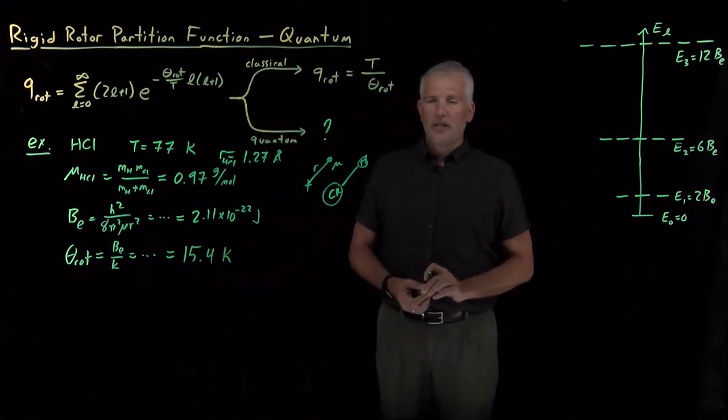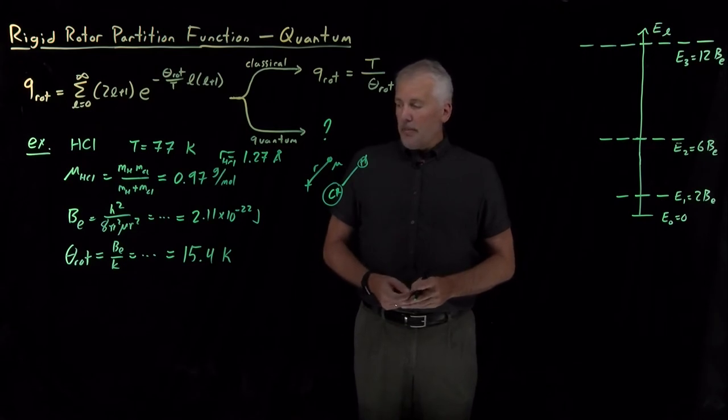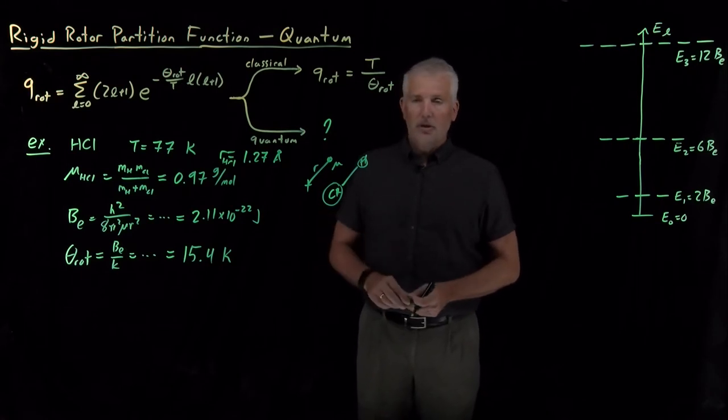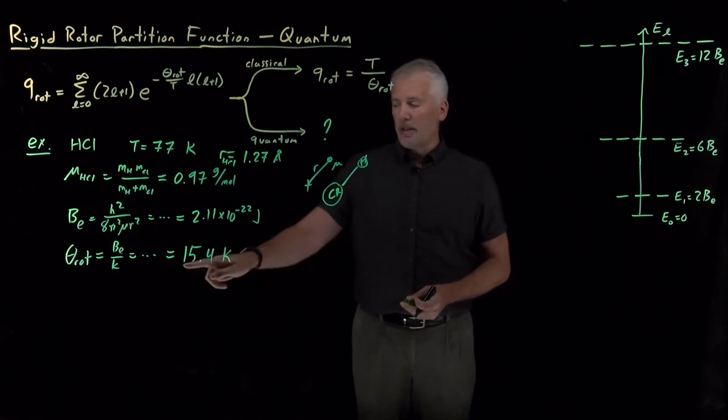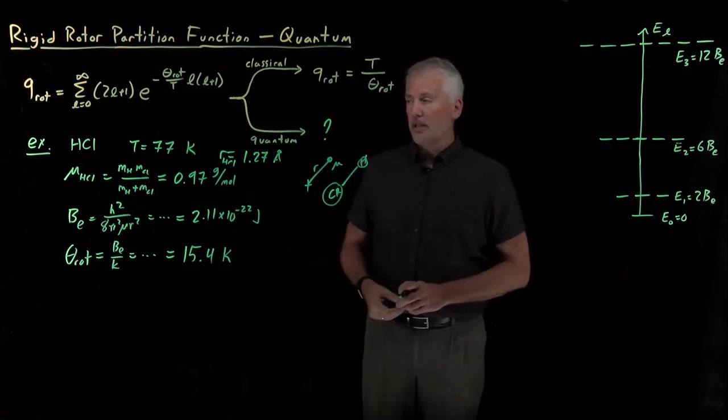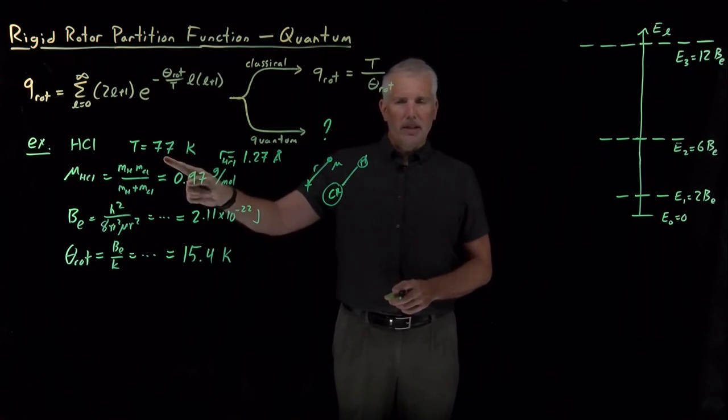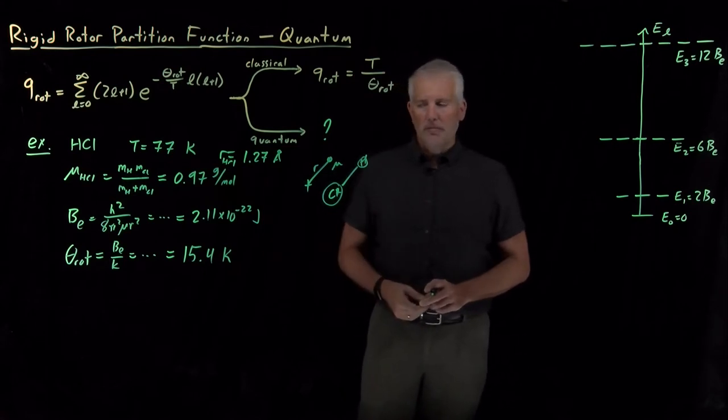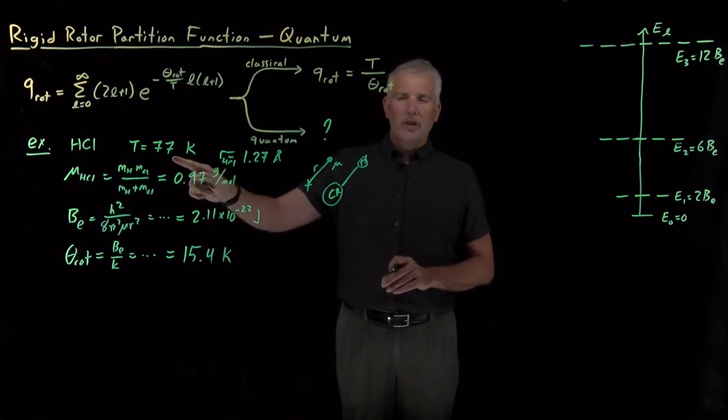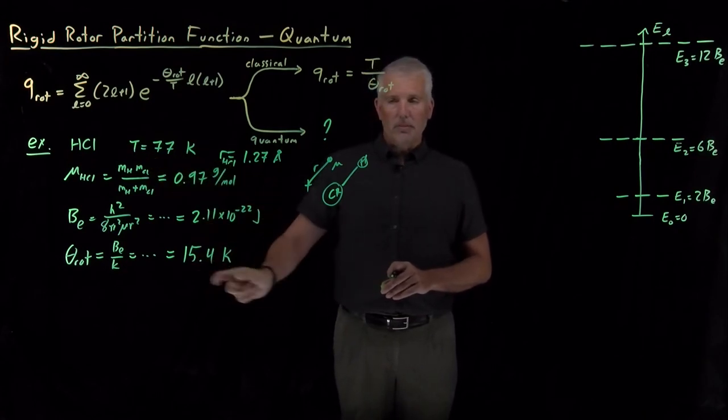So the rotational temperature of this HCl molecule is 15.4 Kelvin. That's the number that we can stop and think what it means. Is that hot or cold? That sounds like a small number, 15.4 Kelvin. It's a little larger temperature than we saw previously for carbon monoxide. So that means it's more quantum mechanical, largely because its reduced mass is much smaller than carbon monoxide's was. But notice that 15.4 Kelvin, although it's less than 77 Kelvin, it's not much much less than 77 Kelvin. So maybe we're not comfortable using the classical approximation and saying that the system is very, very hot compared to the rotational temperature.